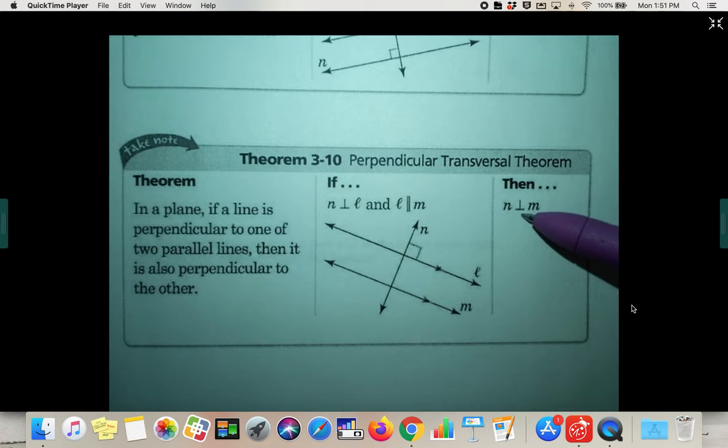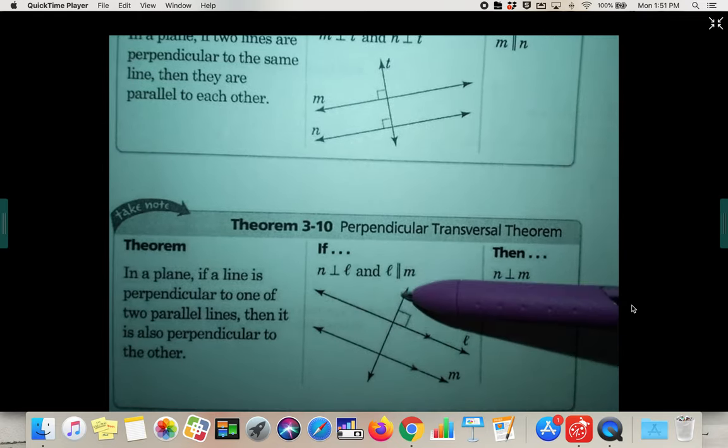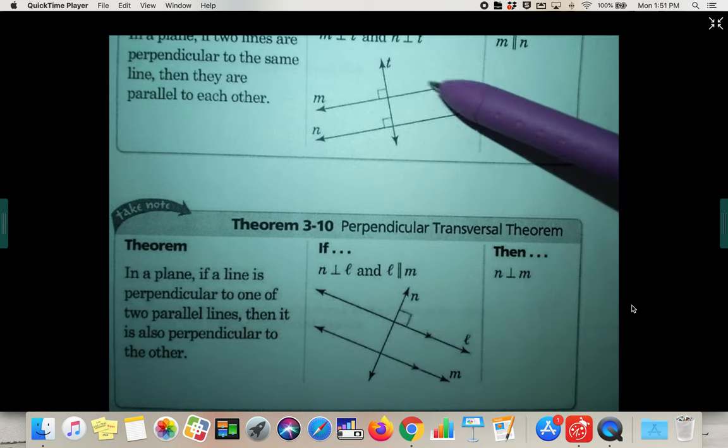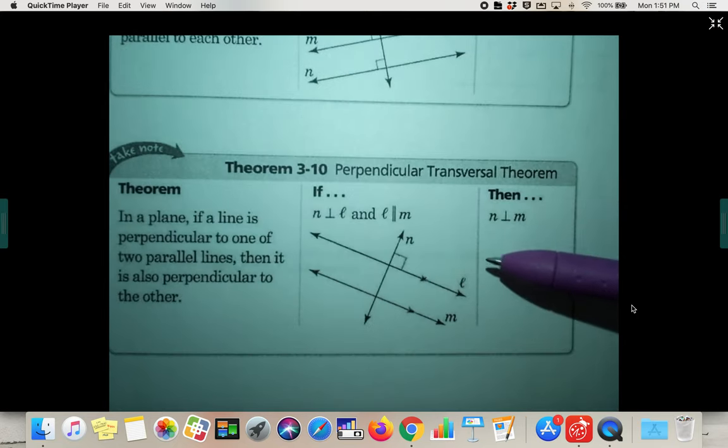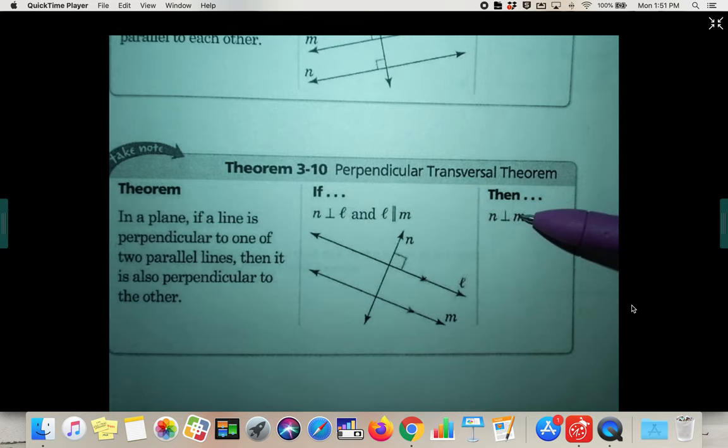then N is also perpendicular to M. So these two theorems are very similar to each other, they're basically like the converse of each other. If one is perpendicular and the other two lines are parallel, then the other one is also perpendicular to the parallel line.